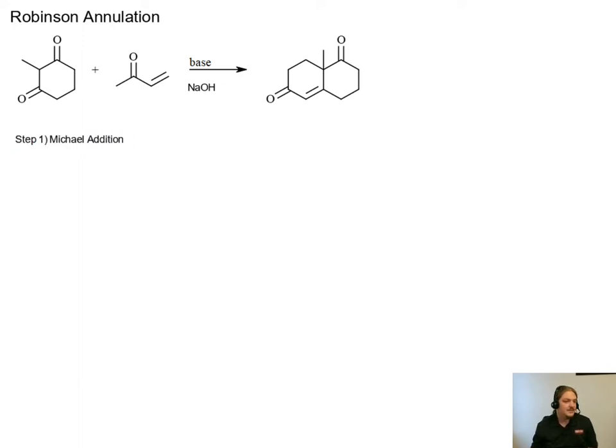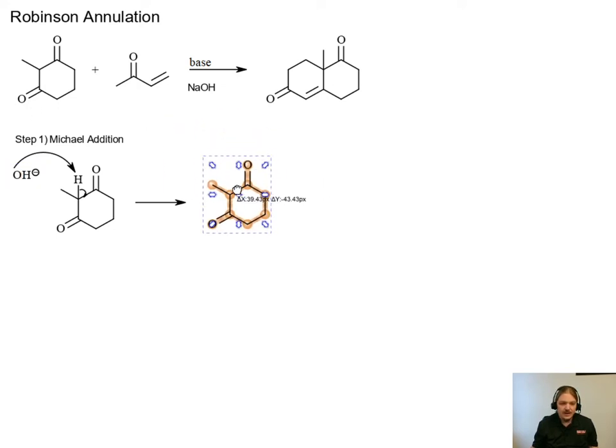And the Michael addition happens first. So the most acidic thing in this reaction mixture is this diketone, with that hydrogen atom there in the middle, having a pKa somewhere in the vicinity of 10, 11, 12, maybe. And so here's our first step.